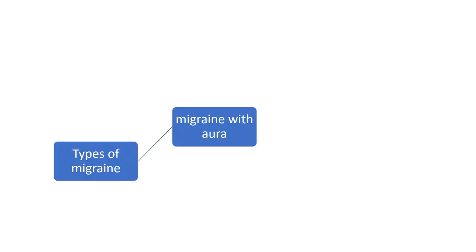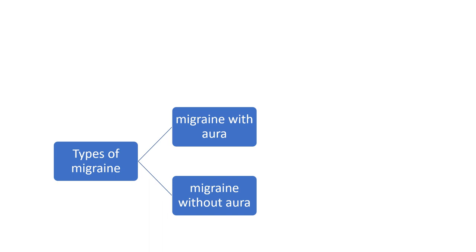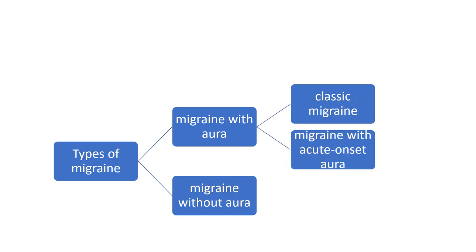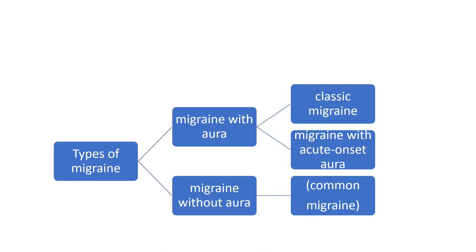Migraine with aura is also called classical migraine — a neuro-throbbing headache preceded by neurological symptoms like visual, sensory, with or without speech and motor disturbances. Migraine without aura is the common migraine — a severe unilateral pulsatile headache that typically lasts two to three days.